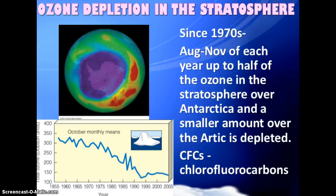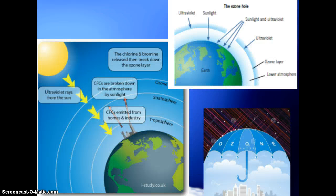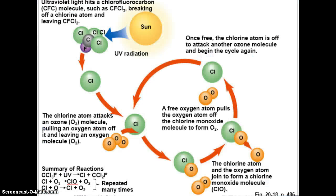Since the 1970s, during August through November, a hole — really a thinning — in the ozone layer has been observed over Antarctica, and another over the Arctic Ocean. Scientists determined the cause was chlorofluorocarbons, or CFCs, released from refrigerants, air conditioners, and aerosol cans. When CFCs contact ozone, they break it down, allowing harmful radiation to pass through.